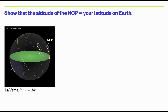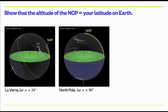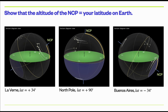For example, from La Verne, which is at latitude 34 degrees north, this angle is 34 degrees — the north celestial pole is 34 degrees above the horizon. If you were at the north pole (latitude +90), the north celestial pole would be directly above you, and everything would circle at constant altitude — no constellations would ever rise or set. In the southern hemisphere, Buenos Aires is around minus 34 degrees latitude, so the north star is 34 degrees below the horizon and the south celestial pole is 34 degrees above the southern horizon.